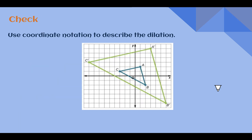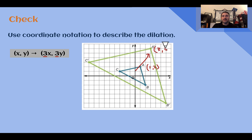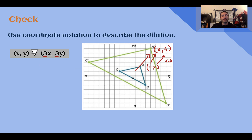Check your understanding: write the coordinate notation for this dilation. Checking: A was at (1, 2) and A' is at (3, 6) — multiplied by 3. B was at (2, -2) and B' is at (6, -6) — multiplied by 3. C was at (-3, 1) and C' is at (-9, 3) — multiplied by 3. So the scale factor is 3, and the coordinate notation is (x, y) → (3x, 3y).